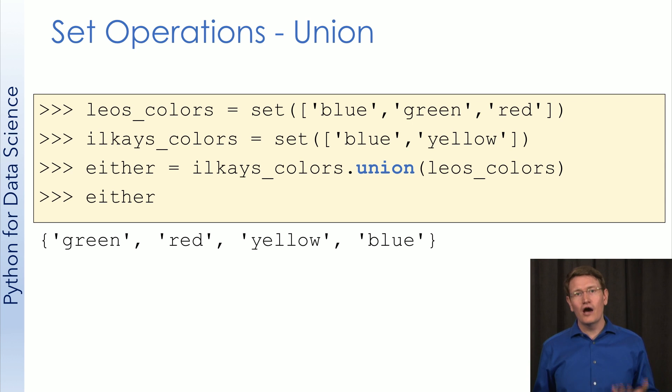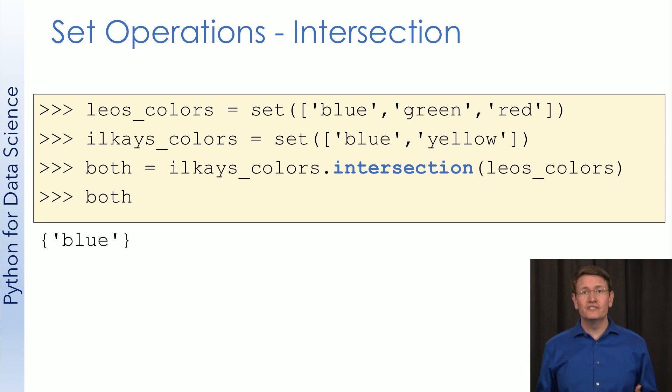To find the unique items in common, we'd use the intersect method. Calling intersection on these two sets gives us back blue, because blue is in both of the sets.